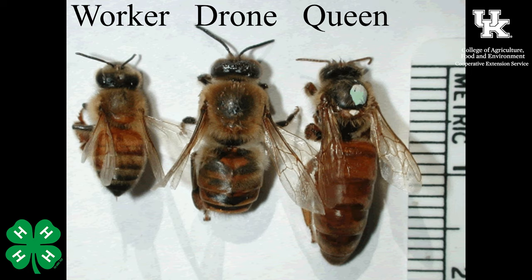The queen is the largest bee and will live about three to five years. All she does is lay eggs — approximately 1,500 eggs a day. That seems like a lot, but if you think about it, thousands of worker bees are dying of exhaustion every month, so she needs to be producing a lot of offspring every day to replace those who die. She doesn't even stop to eat or go to the restroom — all of that is taken care of by the worker bees.